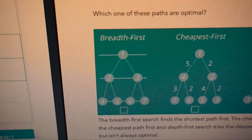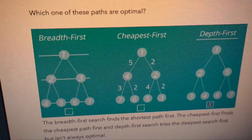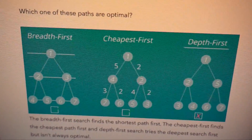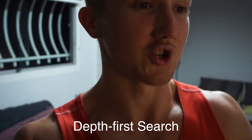Breadth first search will find the shortest amount of steps to the path. Cheapest first will find the pathway that takes the least amount of distance, steps, or computing power. Depth first will go for the deepest search first. Using a map example — if you're using artificial intelligence to plan a route from one location to the next, you could use breadth first search to find the route with the least steps, or cheapest first to find the least distance. Depth first search is probably not optimal for a route-finding algorithm.